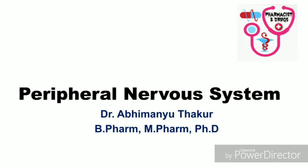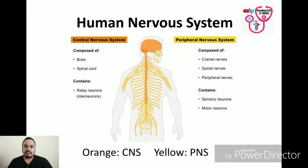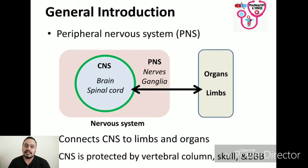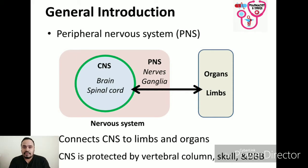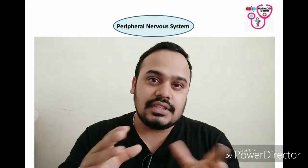The peripheral nervous system is one of the two components that make up the nervous system of bilateral animals, with the other part being the central nervous system. The peripheral nervous system consists of the nerves and ganglia outside the brain and spinal cord. Its main function is to connect the central nervous system to the limbs and organs, essentially serving as a relay between the brain and spinal cord and the rest of the body.